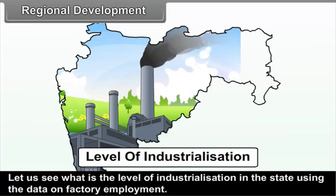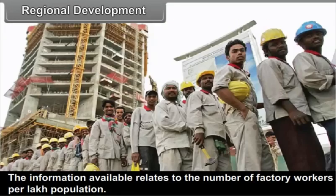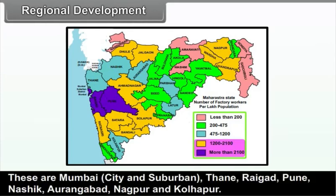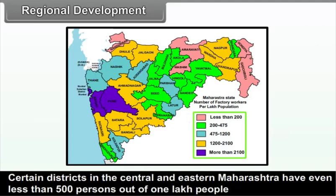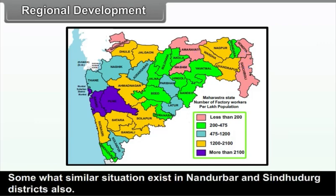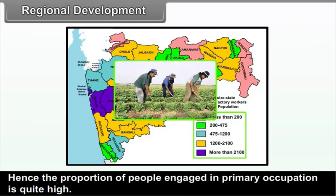Let us see the level of industrialization in the state using data on factory employment. The information relates to the number of factory workers per lakh population, shown in figure 8.5. From the map, only 9 districts have more than 1,000 factory workers per lakh population: Mumbai City and Suburban, Thane, Raigarh, Pune, Nasik, Aurangabad, Nagpur and Kolhapur. Certain districts in central and eastern Maharashtra have less than 500 persons per lakh employed in factories. A somewhat similar situation exists in Nandurbar and Sindhudurg districts, where the proportion of people engaged in primary occupation is quite high.